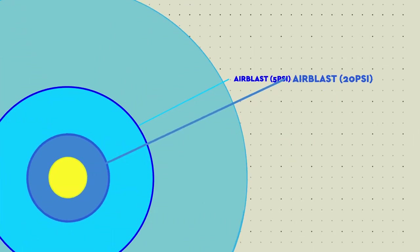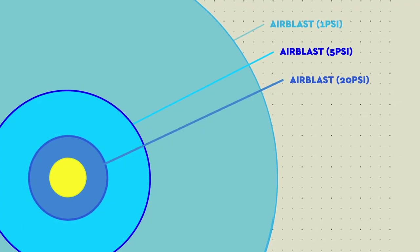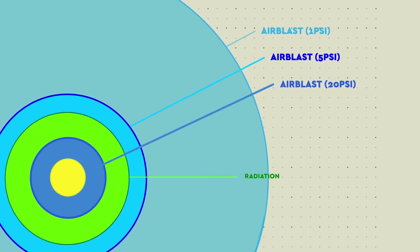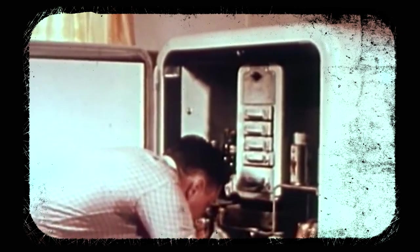But maybe a refrigerator could prove handy when dealing with other pesky elements of a nuclear blast, namely the shockwave and radiation. Now, there is evidence to suggest that an appliance could survive in such trying conditions.